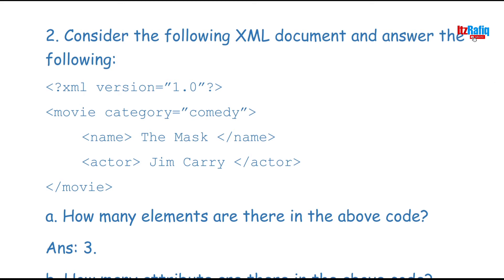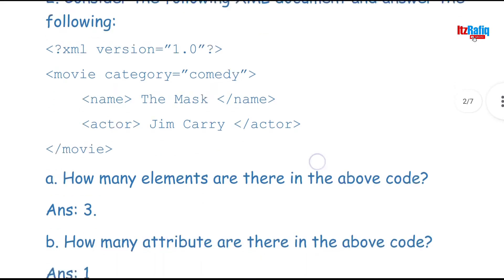The next question: consider the following XML document and answer the questions. The code is: XML version 1.0, then 'movie category="comedy"', then name, marks, actor, and then the closing movie tag. How many elements are there? We count only the opening tags: movie is 1, name is 2, actor is 3 — so there are three elements. Here, movie is the element name, category is the attribute, and comedy is the value.